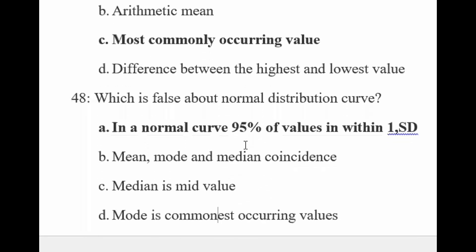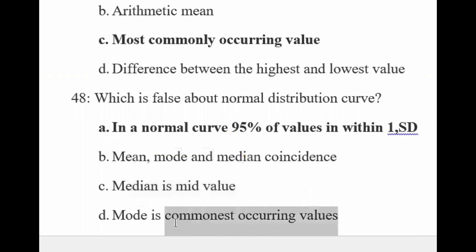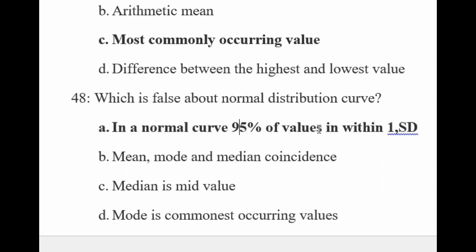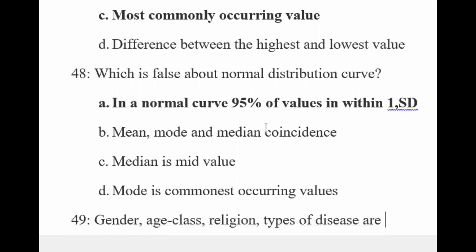Which statement is false about the normal distribution curve? Mean, mode, and median coincide — this is correct, not false, because all three can be on the same line. Median is the mid value — correct. Mode is the most commonly occurring value — correct. But '95% of data lies within one standard deviation' is false, because 95% falls within 2 standard deviations. In normal distribution: 1 SD contains 68%, 2 SD contains 95%, and 3 SD contains 99.7% of data.